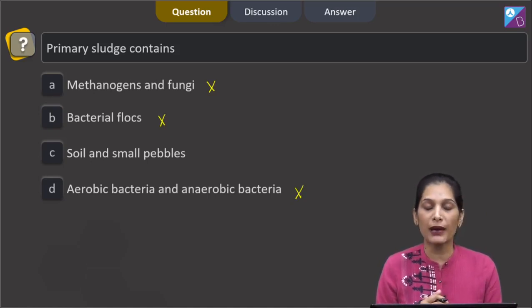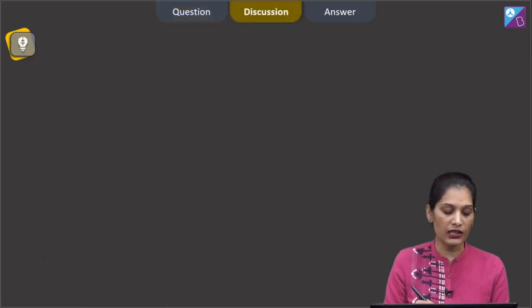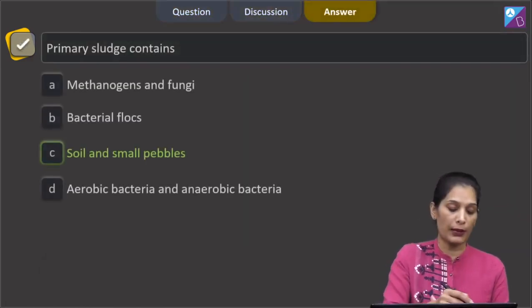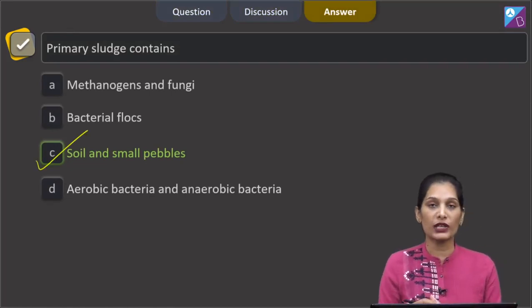No. Because these are seen during the biological treatment or the secondary treatment of sewage. The soil and small pebbles, these are seen during the primary treatment of the sewage or in the primary sludge. So the correct option for the given question is option C which says soil and small pebbles.